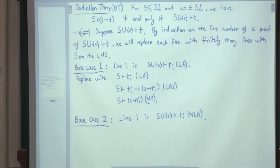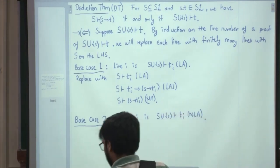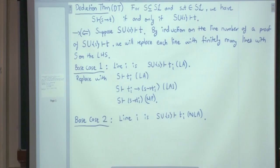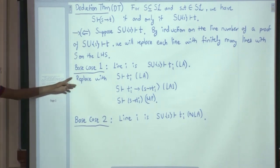It can either be a logical axiom or it can be a non-logical axiom. So that's how we determine what is a base case. What could be line number 1? What could be the reason for line number 1? Line numbers 1 and 2 always have to be LAs and NLAs. But line number 3 onwards, they could have reason MP, modus ponens.